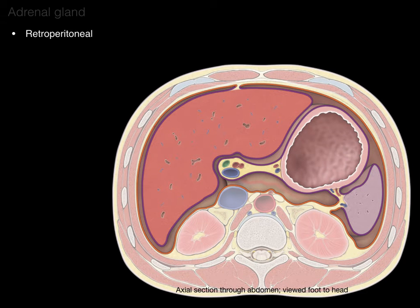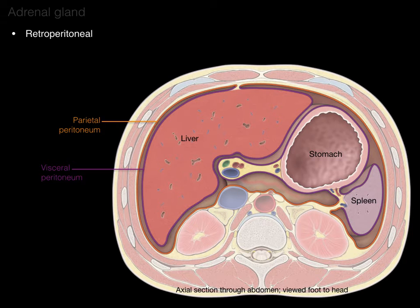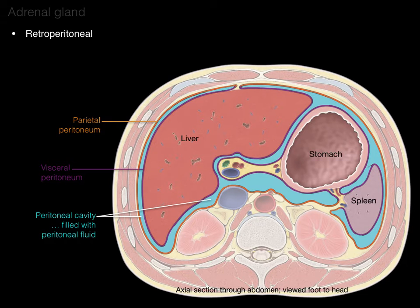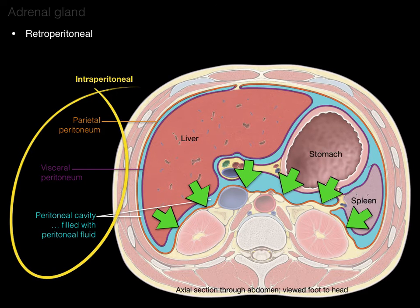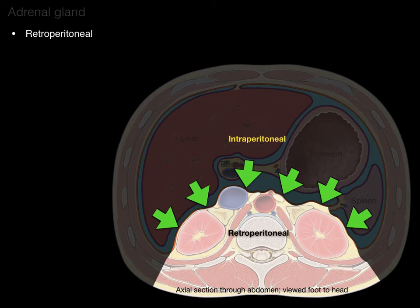The adrenal gland is retroperitoneal. Here we have an axial section through the abdomen, viewed from foot to head like an axial CT. The liver is in the upper right, the stomach and spleen in the upper left. In orange is our parietal peritoneum — the mesothelium lining the wall — and the visceral peritoneum lining the organs. In between the two is the peritoneal cavity, filled with peritoneal fluid. Everything behind the parietal peritoneum is retroperitoneal.